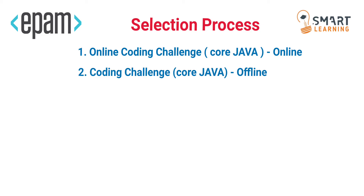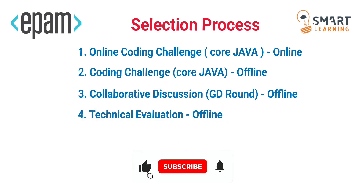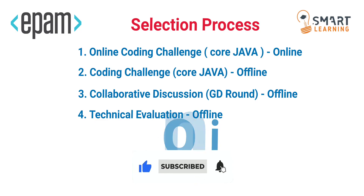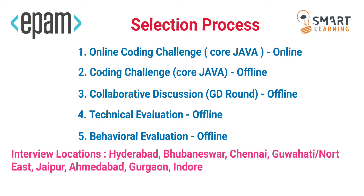The third round is a collaborative discussion, which is a group discussion, conducted offline. The fourth round is a technical discussion, also offline. The fifth round is a behavioral evaluation, face-to-face in offline mode. This is the selection process for both Software Engineer and Test Automation Engineer roles. From the second round onwards it will be offline. The interview locations are Hyderabad, Bhubaneswar, Chennai, Guwahati, Jaipur, Ahmedabad, Gurugram, and Indore.